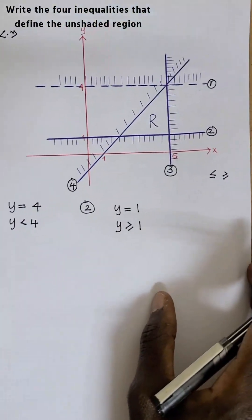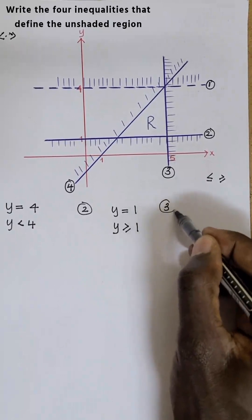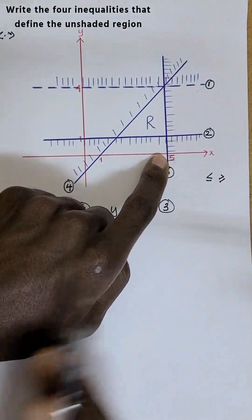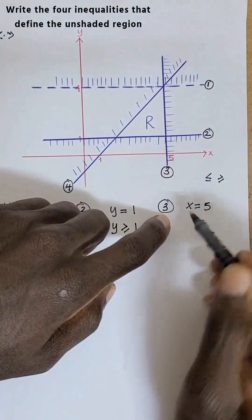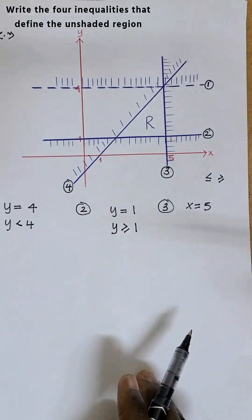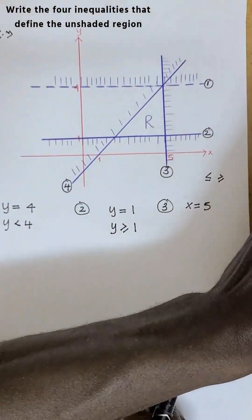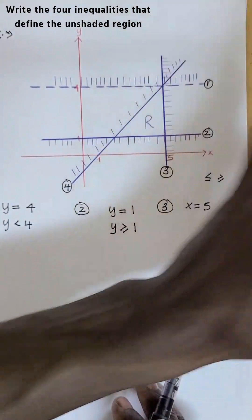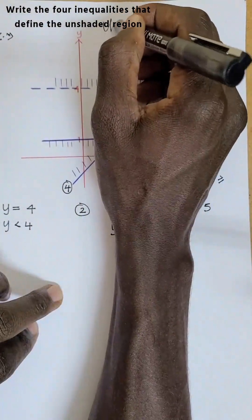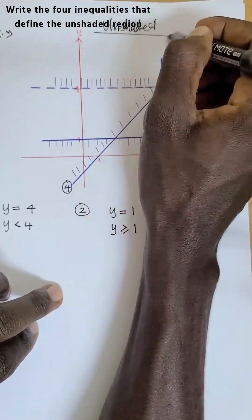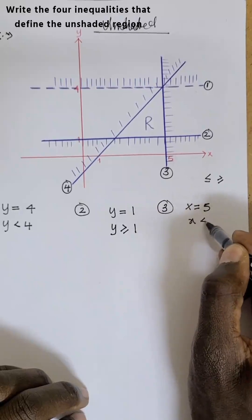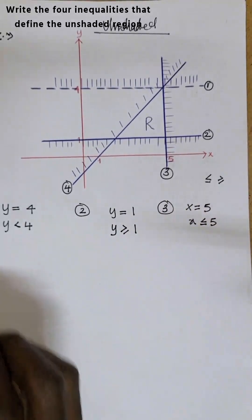Line three is passing through the x-axis at point five comma zero. So x equals five — that's why it's cutting the x-axis. The line is not dotted, so we use less than or equal to. They have shaded the part above five; we don't want that. We want the unshaded part which is below five. So x is less than or equal to five.